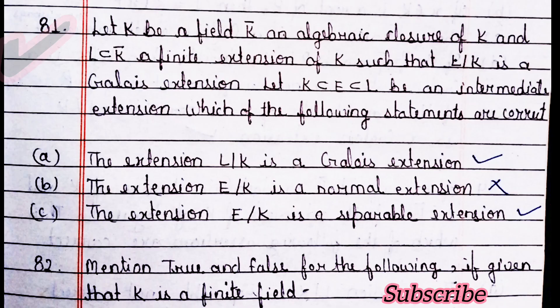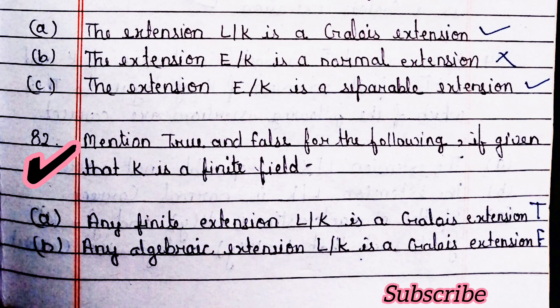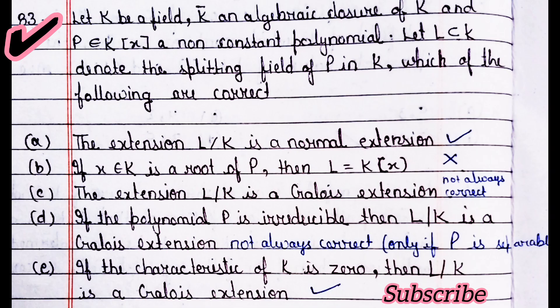Next question: mention true and false for the following, if K is a finite field — statement A is correct, statement B is false. Next question: let K be a field, K-bar an algebraic closure, and p in K[x] a non-constant polynomial, L the splitting field of p in K-bar. Which are correct? Option A is correct, option B is false, and option C — the extension L/K is a Galois extension — is not always correct. If p is irreducible, then L/K is a Galois extension — not always correct; only if p is separable.